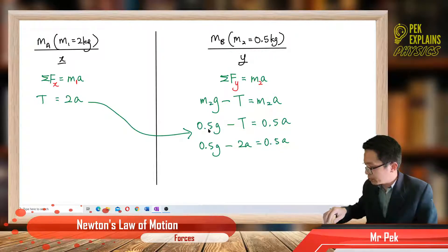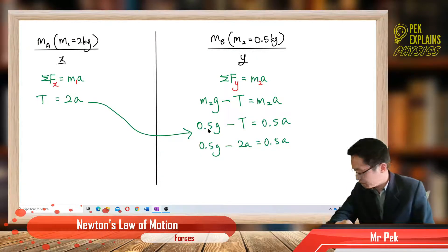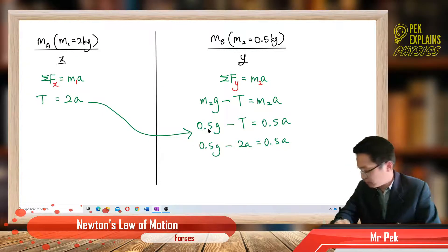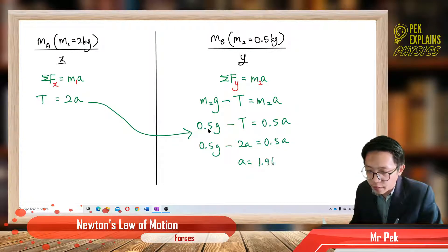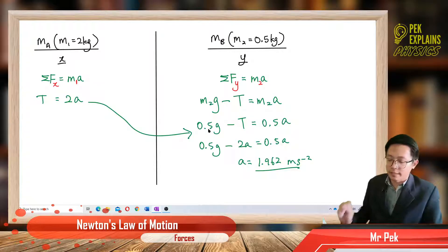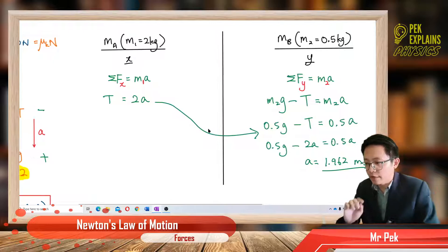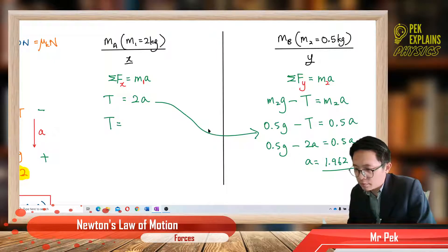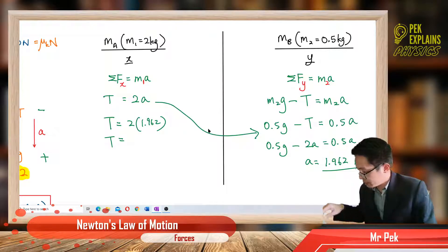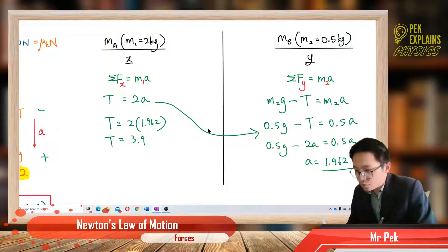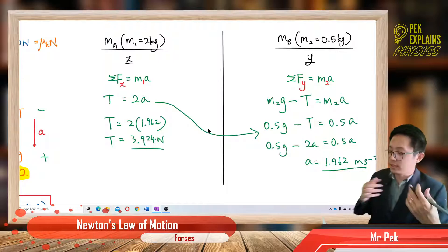Substituting tension from equation 1 into equation 2: 0.5g − 2A = 0.5A. Solving, we get acceleration = 1.962 m/s². Now substituting back to find tension: tension = 3.924 N. That's our answer for Part A.